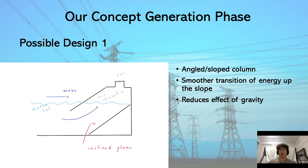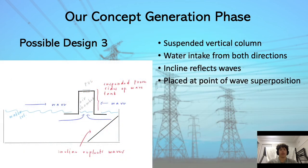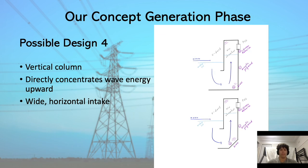We were able to come up with a series of possible designs after discussing the concept generation techniques. Our first possible design is an angled or sloped water column, featuring an angled backing which allows for a smooth transition of energy up the column and reduces the effect of gravity on the water's motion. Our second possible design is a fishhook-shaped water column, featuring the water moving vertically, which increases the air pressure in the chamber and the fluctuations of this air. Our third possible design is a suspended vertical water column, which can intake water from waves in both directions and features an inclined plane that reflects waves and causes disturbance — the column will be placed at a point of wave superposition to maximize wave energy intake. Our final possible design is a J-shaped vertical column, featuring maximization of the direct transfer of wave energy upward, with a wide horizontal intake and a small amount of resistance caused by horizontal surfaces.